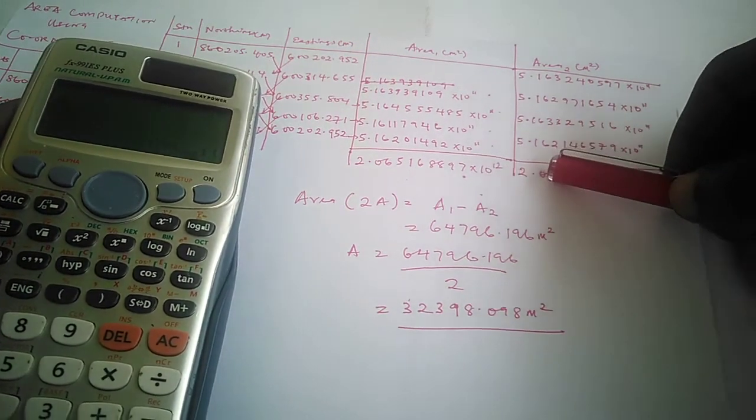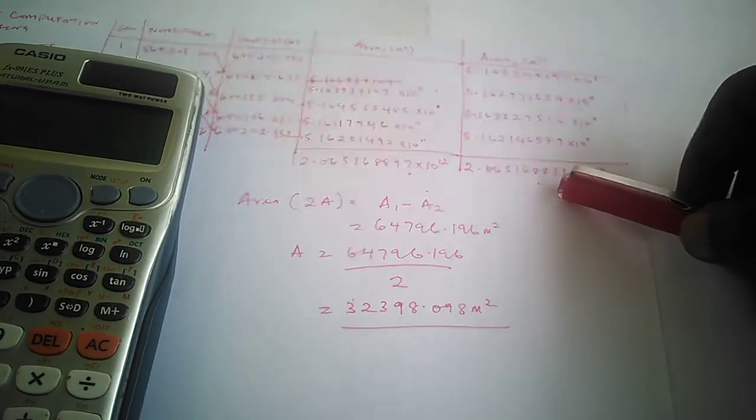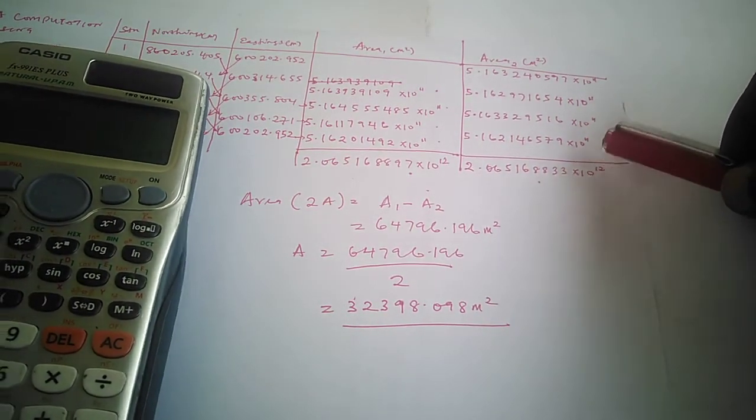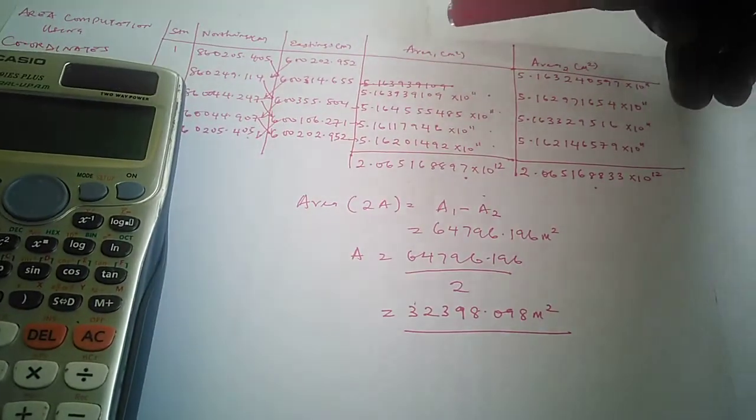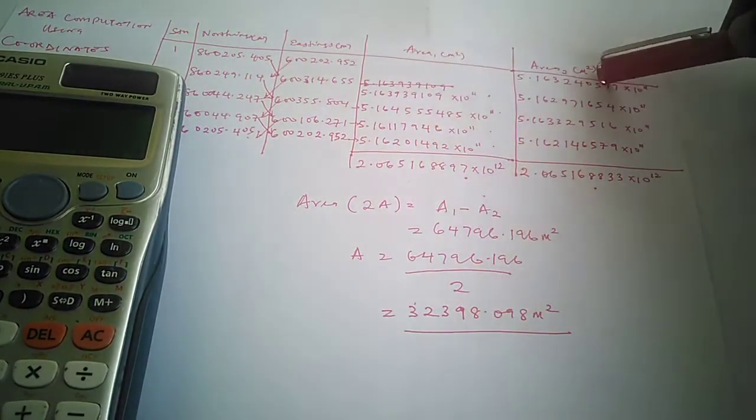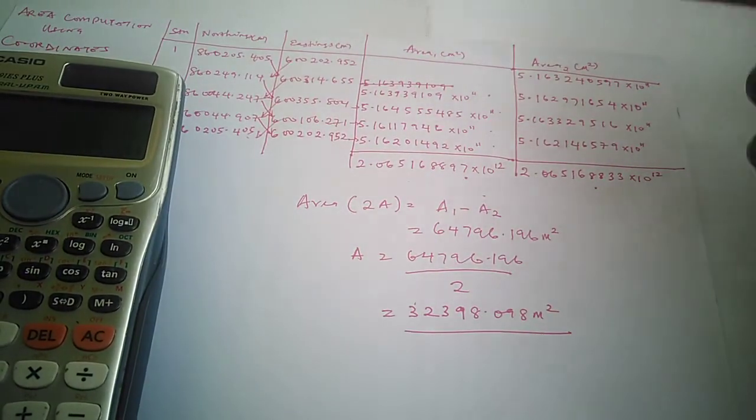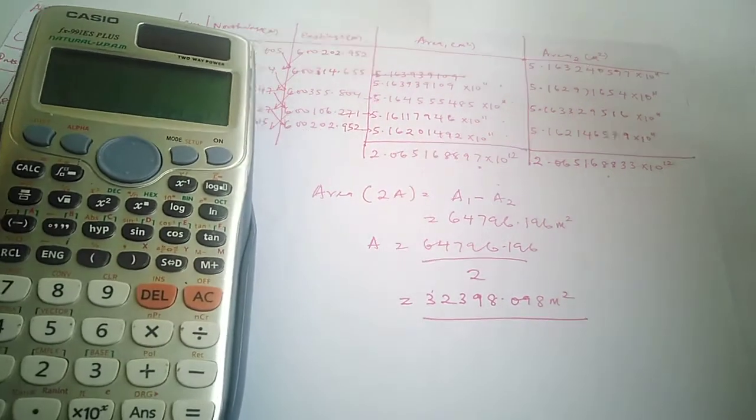You do the same for this other partial area and you get 2.061568833 times 10 to the power 12. The next thing you are going to do is we want to determine the area.